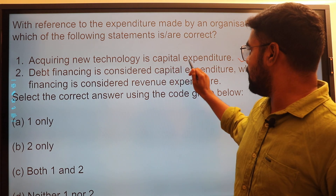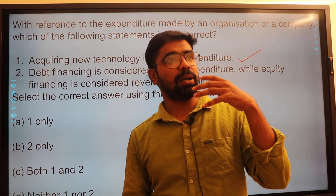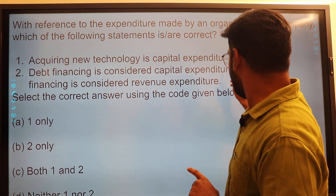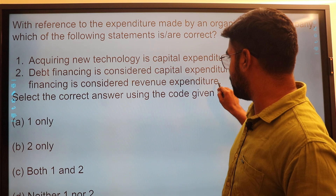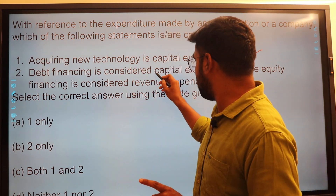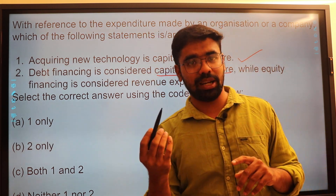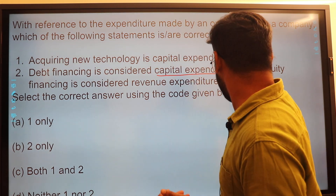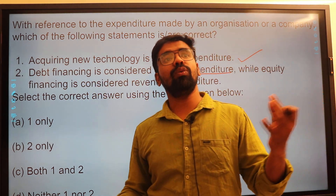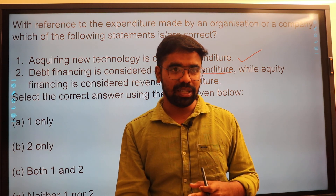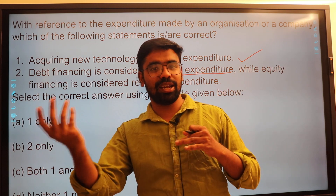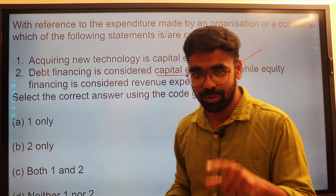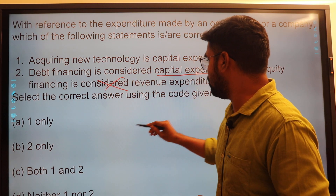Second statement: debt financing is considered as capital expenditure. If you are paying a loan, that is capital. Mostly borrowing is capital. That is equity. With equity financing, ownership rights are given — this is revenue. So paying a loan is capital.